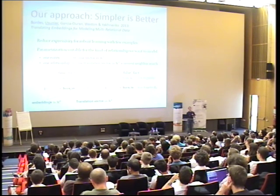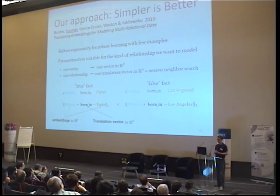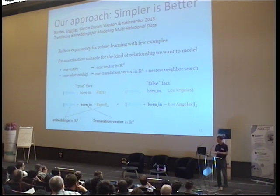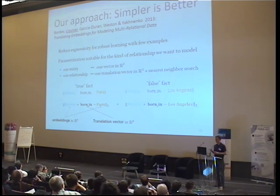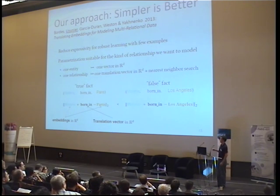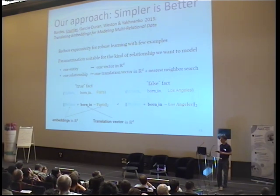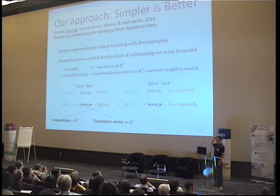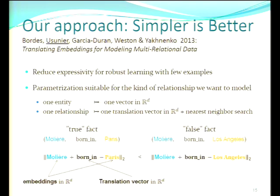What we propose is to model relationships by translations. I will give intuition and motivation for that later. The idea is that we project each entity into a low-dimensional vector. Whenever we have a fact like 'Moliere is born in Paris,' then for the relationship 'born in' there is a translation vector which should map Moliere to something close to Paris. In particular, Paris should be closer to the translated vector than another city which is not the answer.